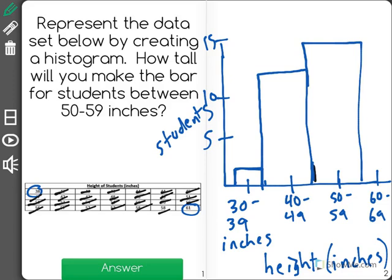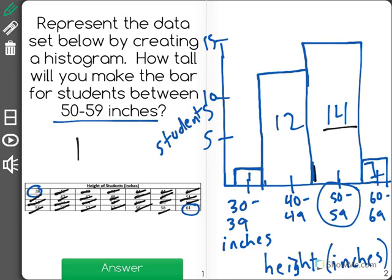And last, we have 60 to 69, where again there's only one student. So the bars are this high. The question is, how tall will you make the bar for students between 50 to 59 inches? Here I have 50 to 59. It is 14 students high for our correct answer of 14.